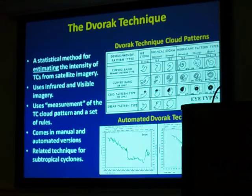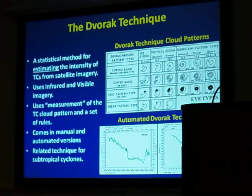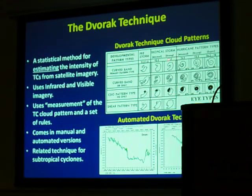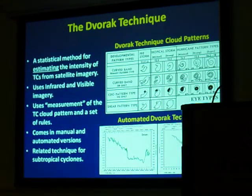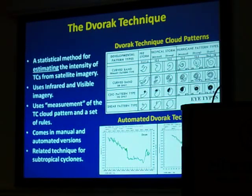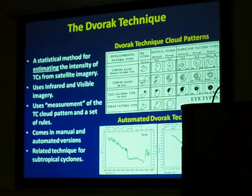You can think of it as a pattern recognition scheme. For the weaker storms we use curved bands or shear patterns, and as the storm gets stronger we start looking at embedded centers and CDOs. For the more mature hurricanes there are T numbers associated with all these various stages, and as we get toward higher T numbers we can measure the eye temperature with regard to the surrounding cold tops of the convection, which gives us some measure of exactly how strong the storm is. This method can be used in both infrared and visible imagery.